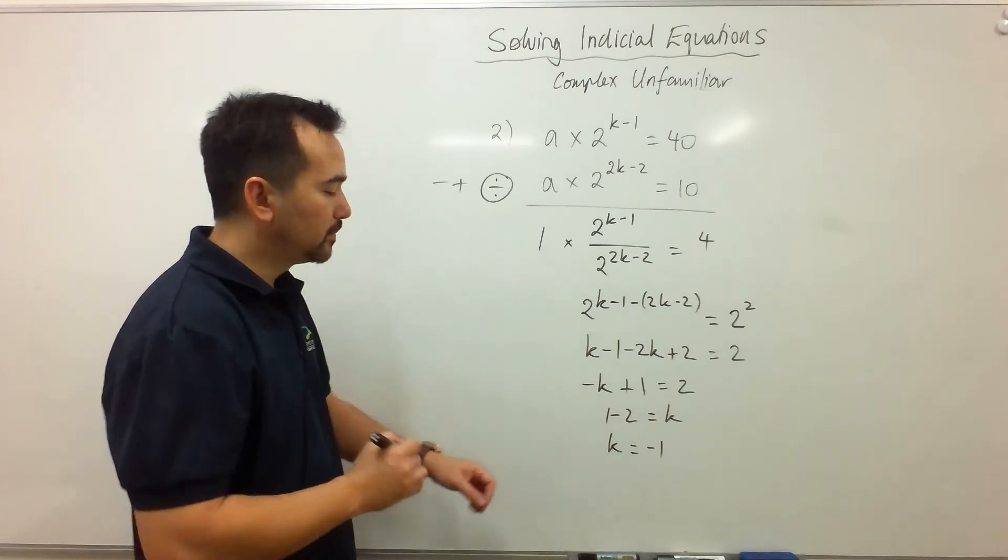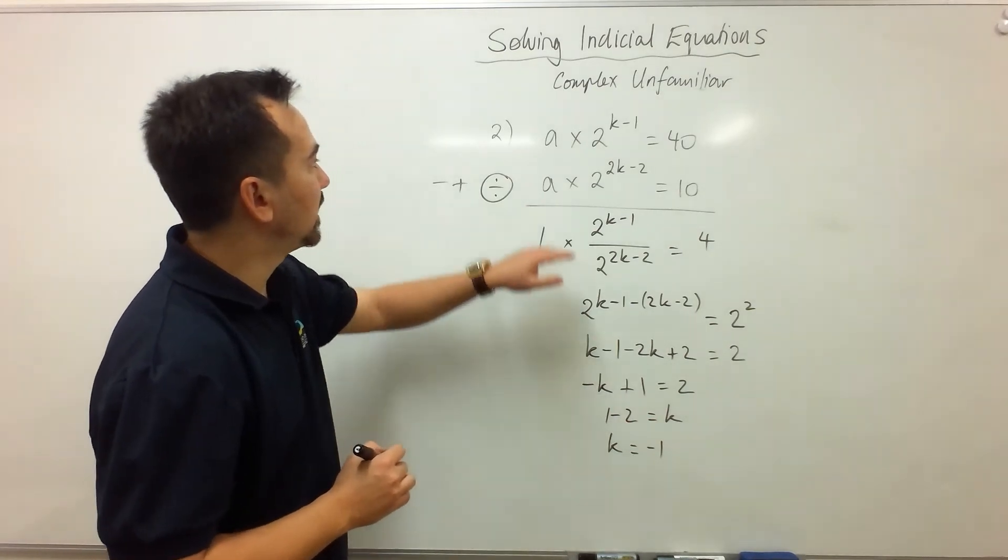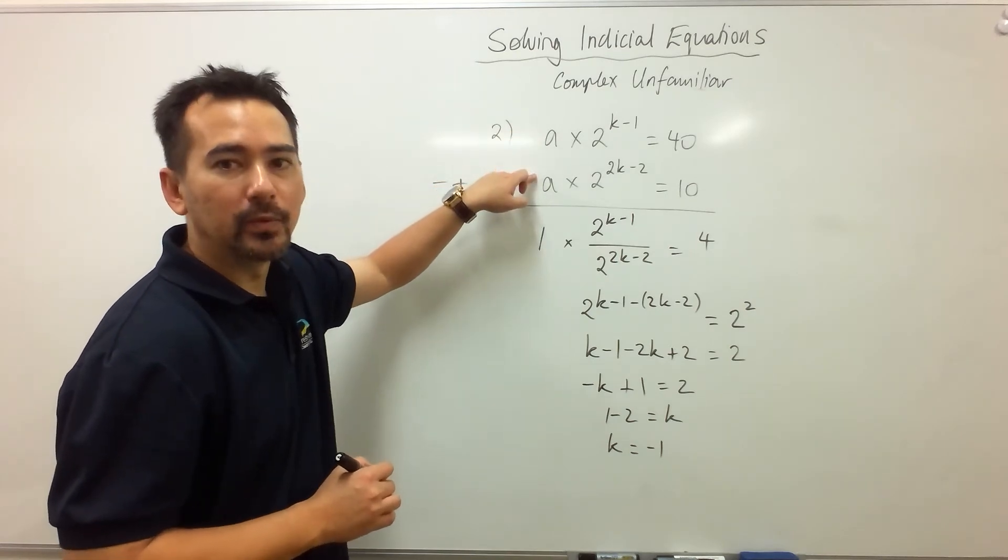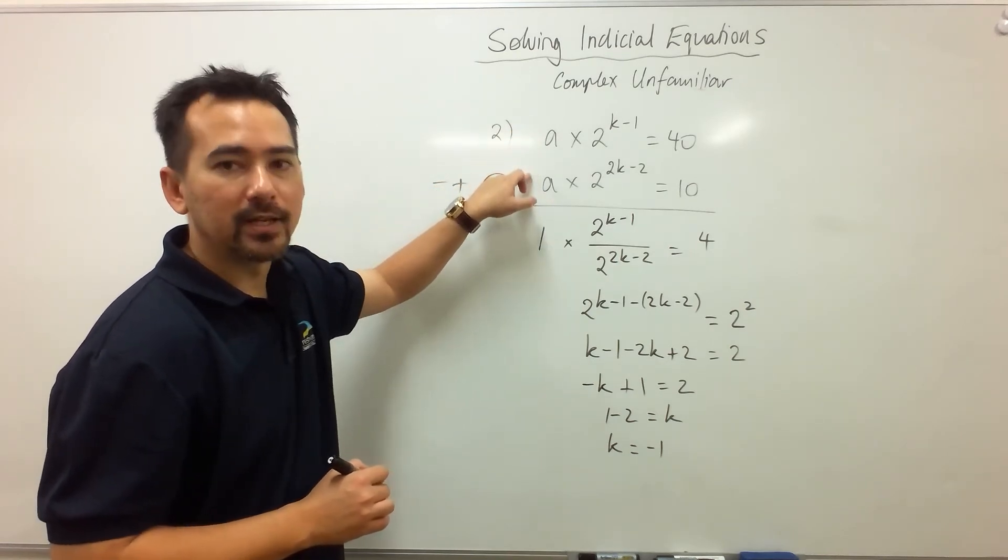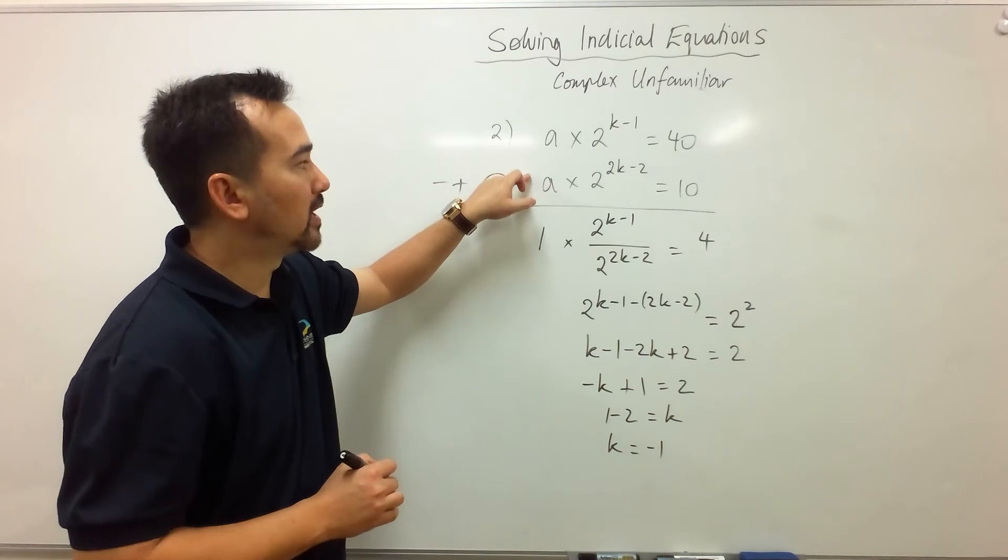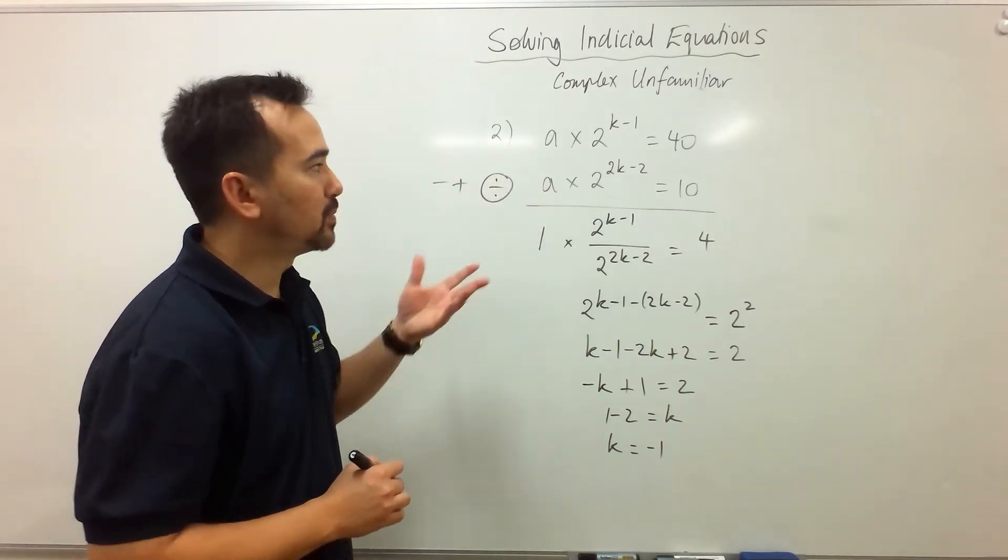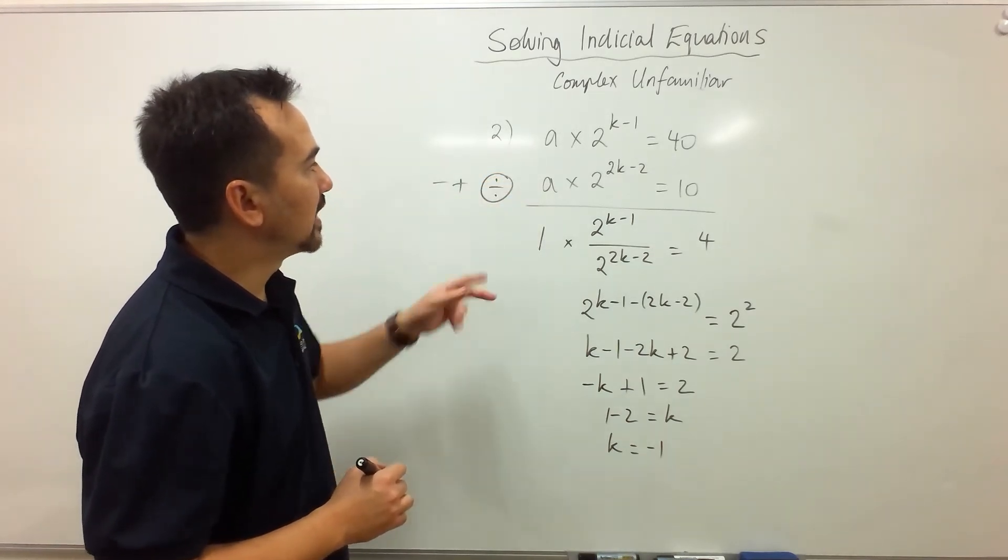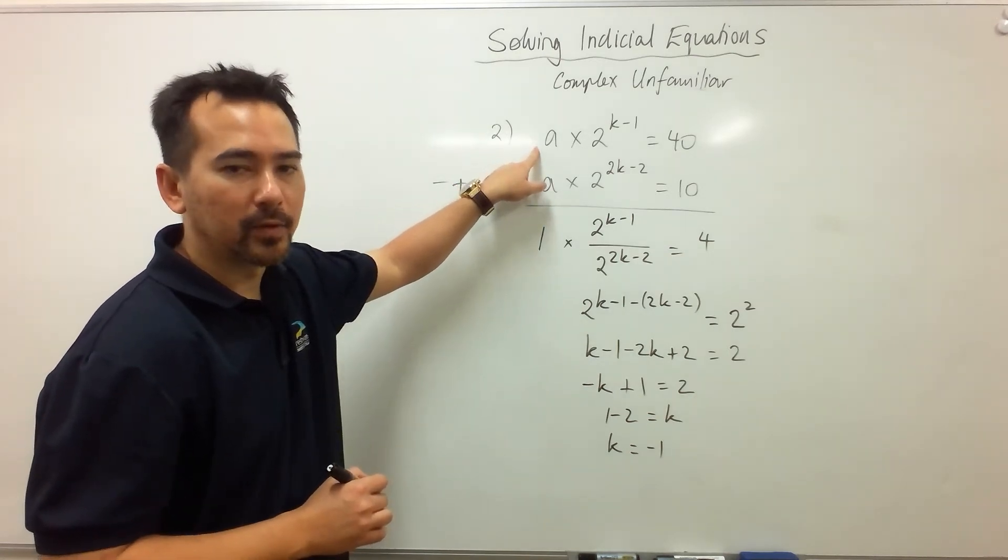All right, so we're halfway there now. Substituting k back into either equation will solve for a, and it doesn't matter which one it is because you're going to get the same answer for a either way. So my advice is just pick the easier of the two. In this case, I think the top equation is easier.